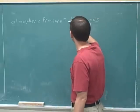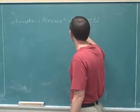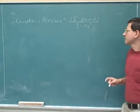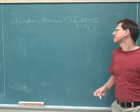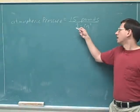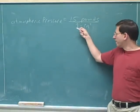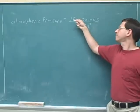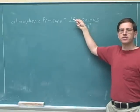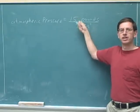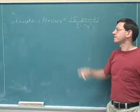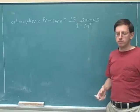Let's combine the number and the units into a single ratio. What it means is that above one square inch of area, there's 15 pounds of atmosphere. Above one square inch of area, there's 15 pounds of atmosphere.